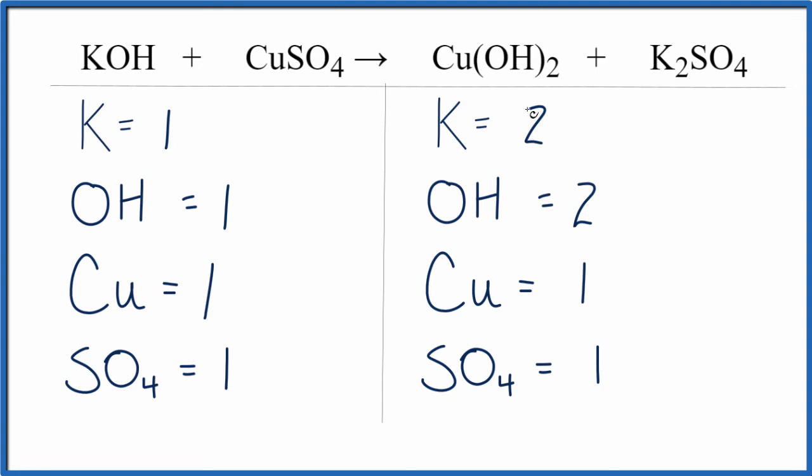It looks like I have twice as many potassiums as I do hydroxides. And to fix that, I can just put a coefficient of 2 in front of the potassium hydroxide, KOH here.